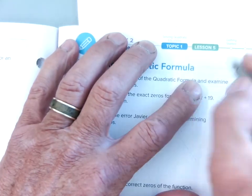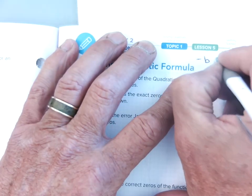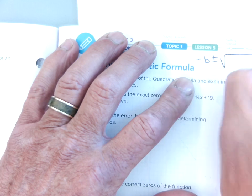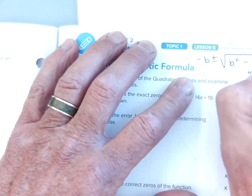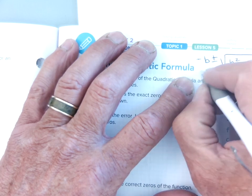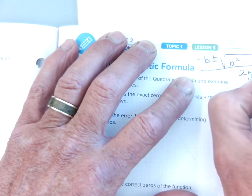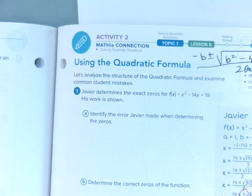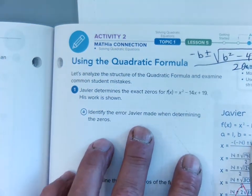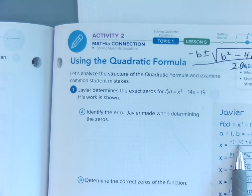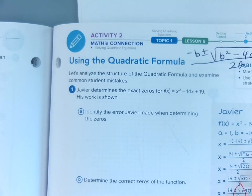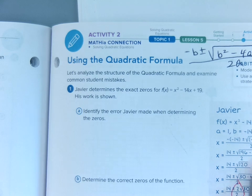So let me write it up here: x equals negative b plus or minus square root of b squared minus 4ac all over 2a. So Javier put it in, he's got his a, b, and c, he put his negative b plus or minus b squared minus 4 times a times c all over 2a.